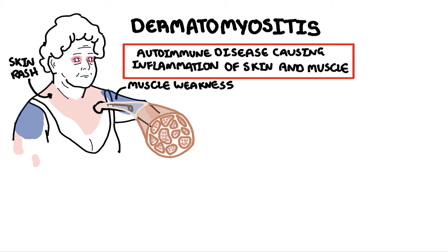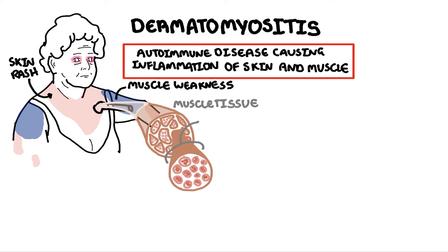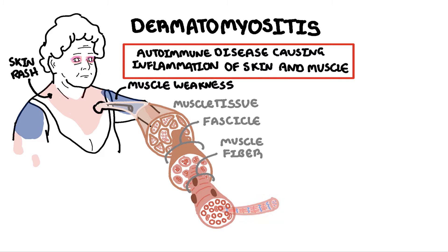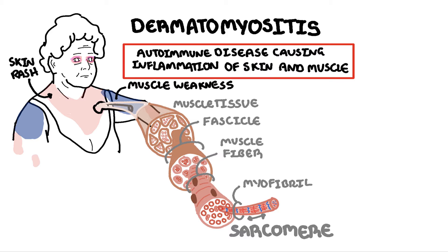This muscle tissue is made up of fascicles, which are made up of muscle units called muscle fibers. Each muscle fiber in turn is composed of myofibrils, which contain the functional unit of muscles called sarcomeres. Sarcomeres are what allow muscles to contract, thus allowing you to lift your arms above your head and climb upstairs.